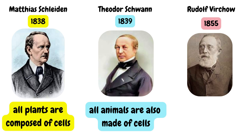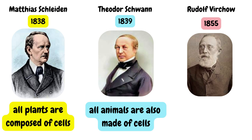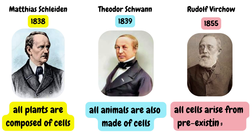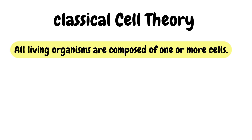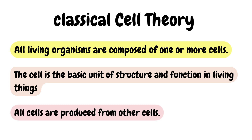In Latin, it says omnis cellula e cellula, and this means all cells arise from pre-existing cells. These three principles form the basis of the classical cell theory that we know today. They are: number one, all living organisms are composed of one or more cells; number two, the cell is the basic unit of structure and function in living things; and number three, all cells are produced from other cells.